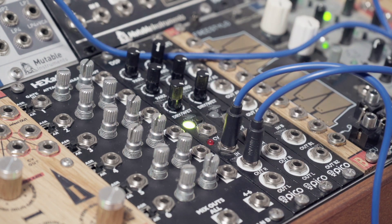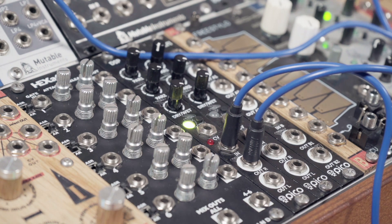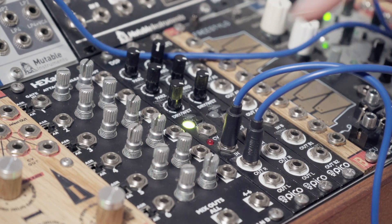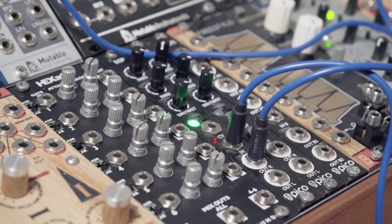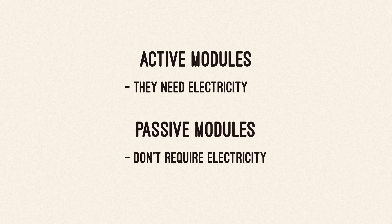So far I have mentioned modules that need to be connected to the bus board with cables — that means they are active; they need electricity. But there is also a group of passive modules, which means they don't require electricity. You can even keep them outside or make a non-powered case. A big plus is that they are usually really easy to build at home and they are quite cheap.